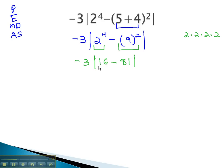Still working inside that absolute value, we can do our subtraction. Negative 3 times the absolute value, and 16 minus 81, we might add the opposite to see that the negative is bigger. And when we do 81 minus 16, we'll have to borrow, and when we do we get 65, so we get negative 65.